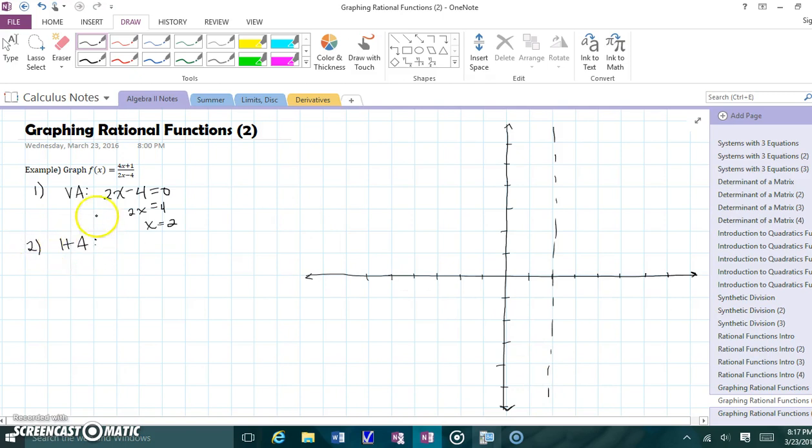Step 2, horizontal asymptote. Let's look at our degrees here. I have a degree of 1 in the numerator, a degree of 1 in the denominator. The degrees are equal. This is case 2. So I'm making a fraction of a over b, my leading coefficients, which happens to be 2. So I'm at y equals 2. So I have my dotted lines.